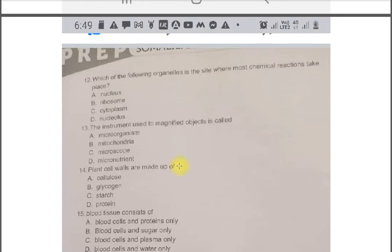The next question. Which of the following organelles is the site where most chemical reactions take place? A. Nucleus. B. Ribosome. C. Cytoplasm. D. Nucleus. The correct option is C. Cytoplasm.